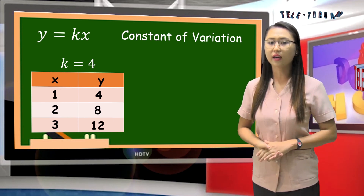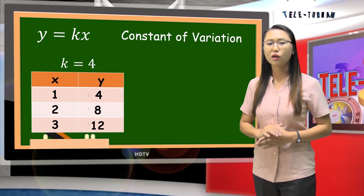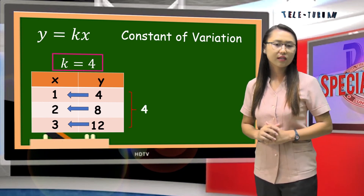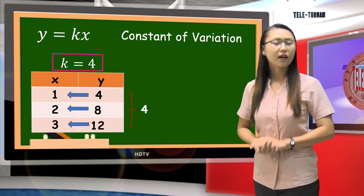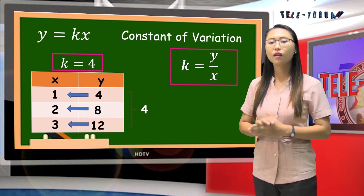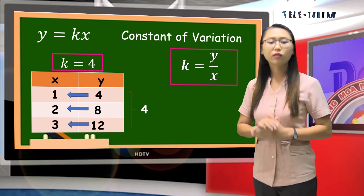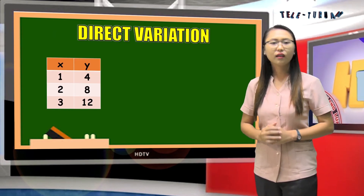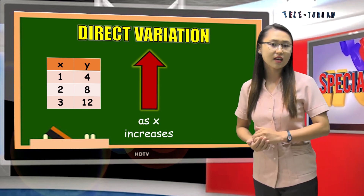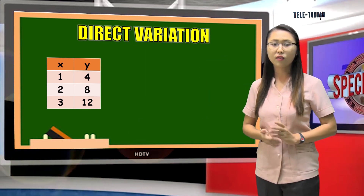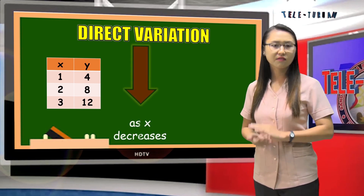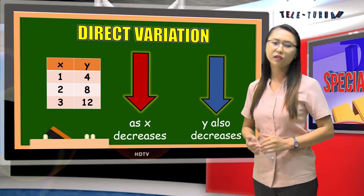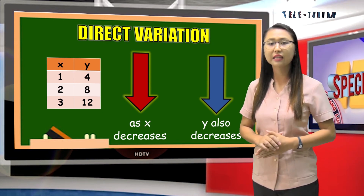By looking at the values of x and y, we will notice that when we divide the value of y by the value of x, the answer is always 4, which is our constant of variation. In direct variation, we can solve for the constant of variation by dividing y by x, or k is equal to y over x. We can also notice that as the value of x increases, the value of y also increases. Or conversely, as the value of x decreases, the value of y also decreases. That is the relationship of two variables in direct variation.